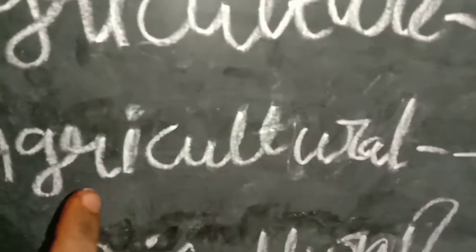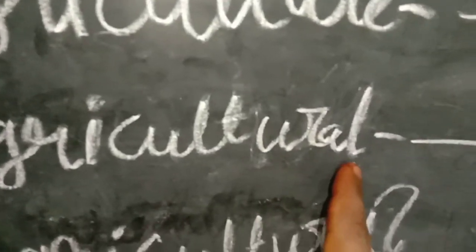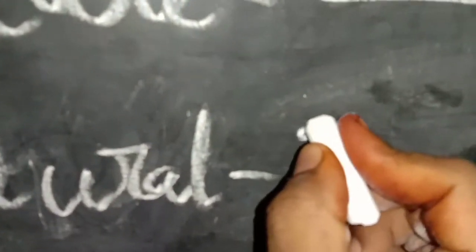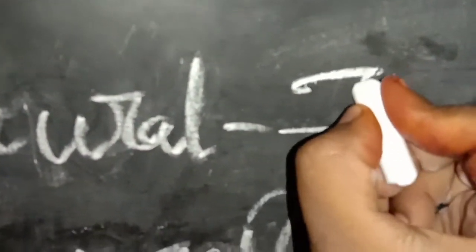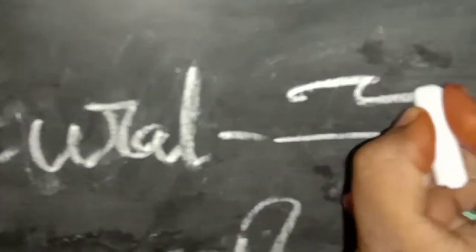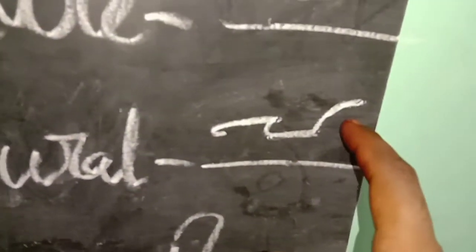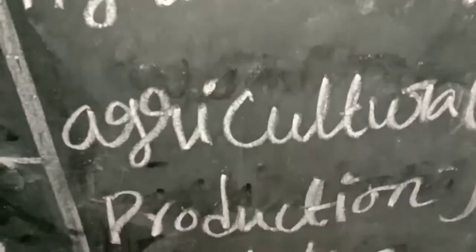R is the G, and G and L is the C. Agriculture. This is agricultural. The L is last. Let's look at R, G, L, C, L — last is the L. This is agricultural. This is agricultural production.